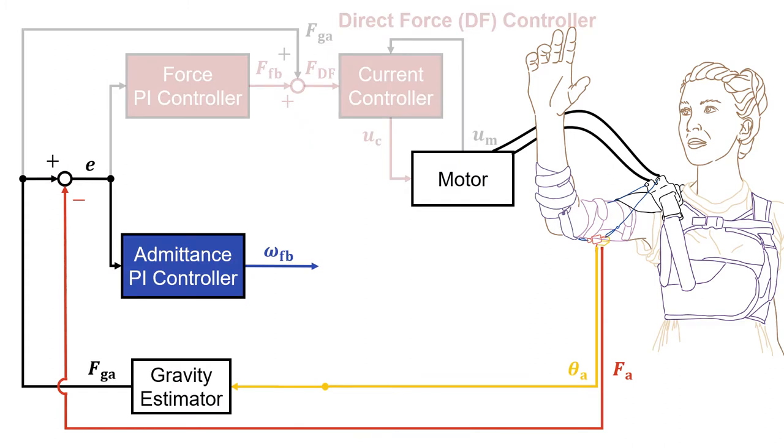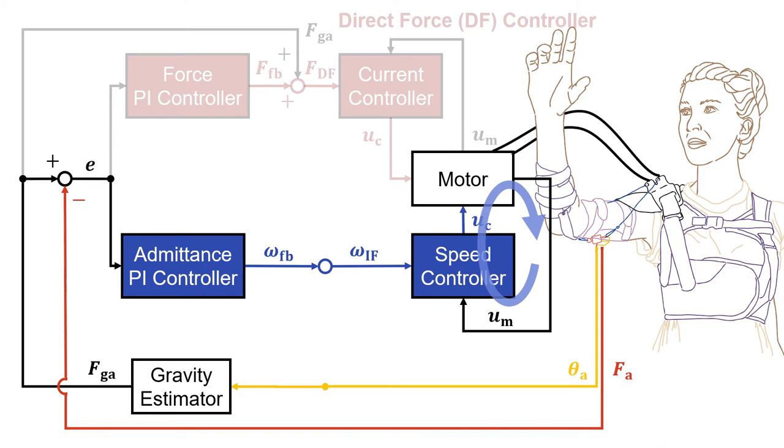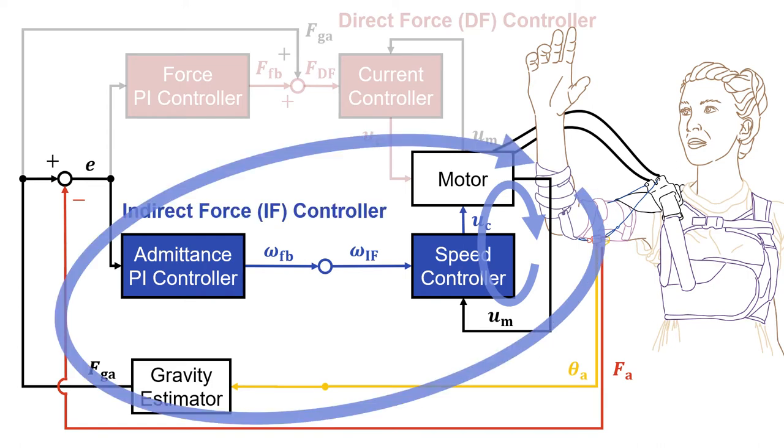For the second controller type, a velocity feedback was generated from the force error through a PI admittance controller. The velocity reference was fed to a lower level motor speed controller, closing the outer indirect force controller loop. An additional movement velocity positive feedback was used to enhance controller reactivity.